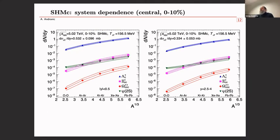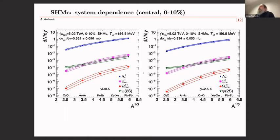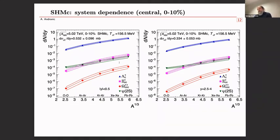Here are the predictions in terms of yields: mid-rapidity on the left, forward rapidity (2.5 to 4) on the right, matching the ALICE muon arm coverage and serving as a good starting point for LHCb. For central collisions (0–10%), you see the expected yields for Lambda_c, Xi_cc, and Omega_ccc, as well as comparisons to the ceremonial state. A good part of these will be measured in Run 3, though the Omega_ccc will remain very challenging.